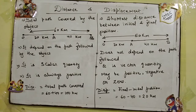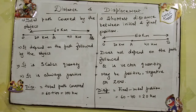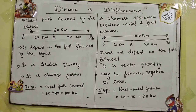Now, what is the relation between motion and distance, or motion and displacement? As I have told the definition of motion — when an object changes position with the passage of time, obviously if an object is moving, its position will change with time, which means it will cover some particular distance. Without covering distance, it cannot change its position. So it is covering some distance and getting displaced from one position to another.